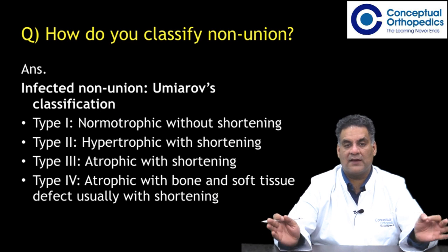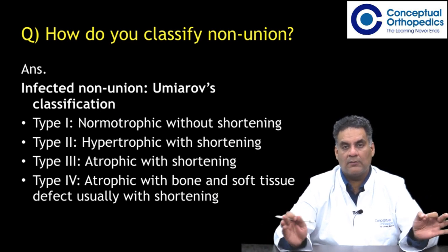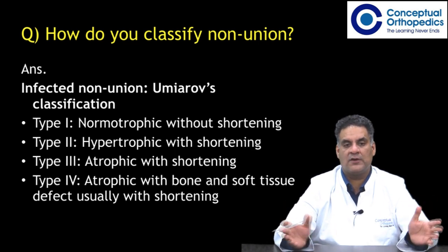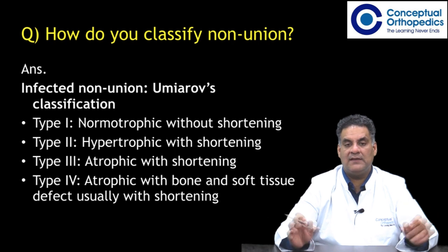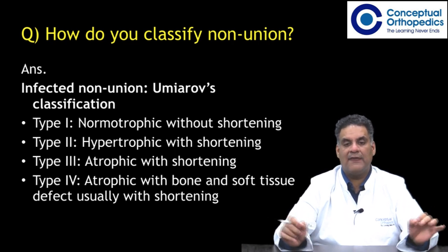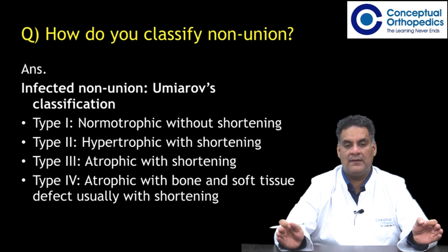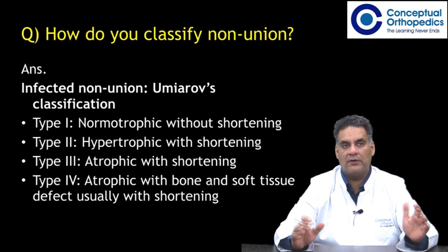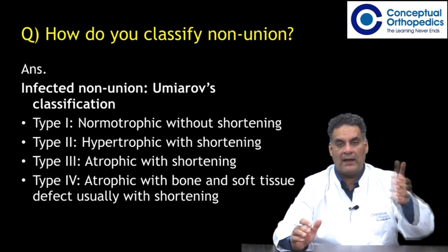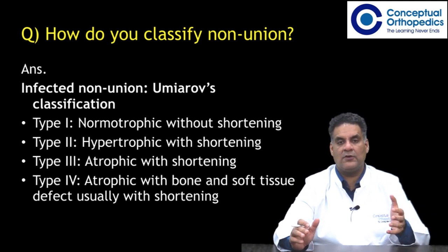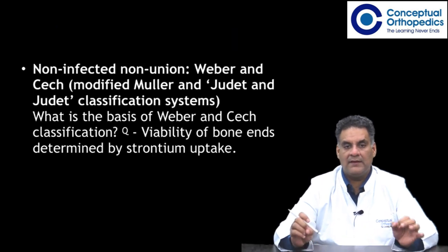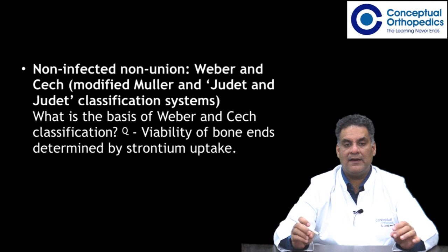How do you classify nonunion? There are a number of classifications: normotrophic bone without shortening is Type 1, Type 2 is hypertrophic bone end with shortening, Type 3 is atrophic bone end with shortening, Type 4 is atrophic bone end with soft tissue defect, usually with shortening. So you have normotrophic without shortening, hypertrophic nonunion, atrophic nonunion, and atrophic bone with soft tissue defect.